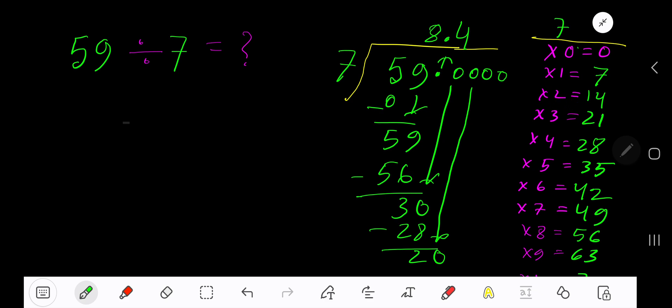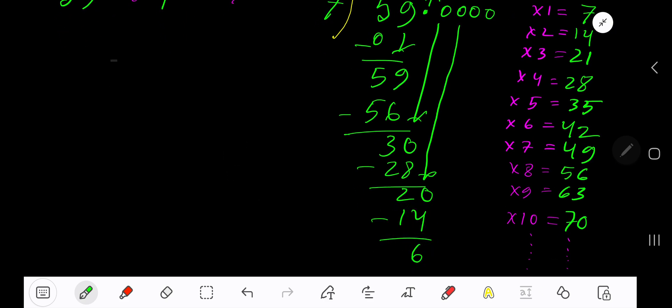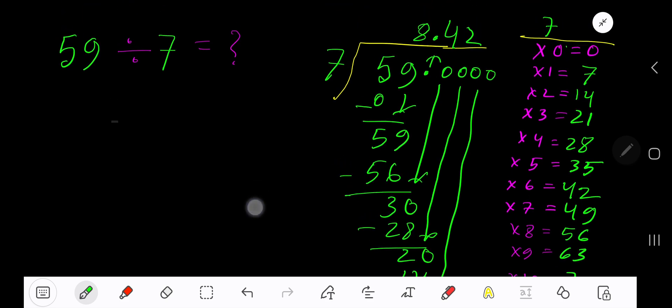2 times 7 is 14. Subtract - we are getting 6. Bring down another zero. 7 goes into 60 how many times? 9 times is 63 which is greater, so 8 times. 8 times 7 which is 56. Subtract.